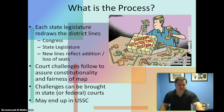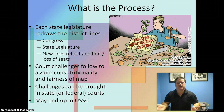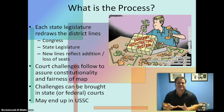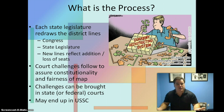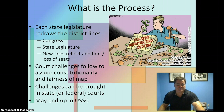Not everybody will agree on what the map should look like, so there are court challenges and arguments over which map each state should use — to assure the map is constitutional and fair. Challenges can be brought in state or federal court, and with the appeals process, if the issue is big enough it could end up in the U.S. Supreme Court. There have actually been a couple of cases coming out of Texas dealing with reapportionment.